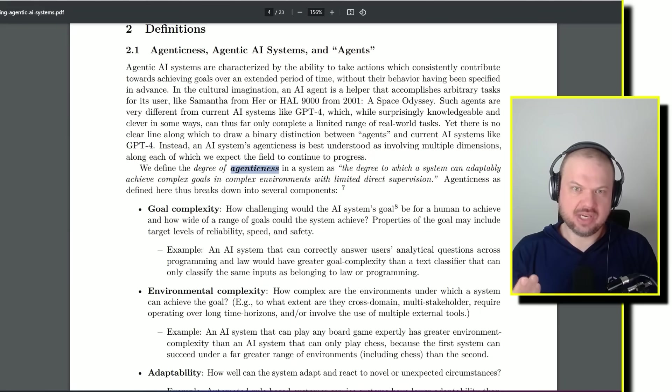They quickly define what they mean when they say AI agents. And I think they actually invent a brand new word. Agenticness. We define the degree of agenticness in a system as the degree to which a system can adaptably achieve complex goals in complex environments with limited direct supervision. Agenticness, as defined here, thus breaks down into several components.